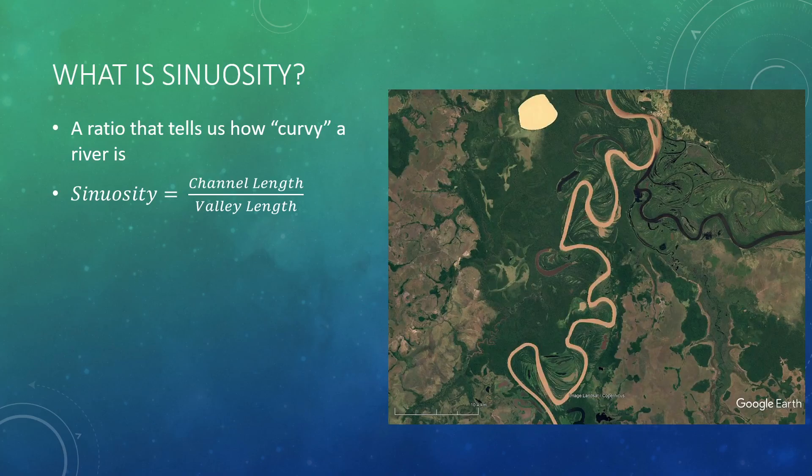So let's look at an example. This is the Rio Memoir in Bolivia. Notice how windy and curvy the river is here. Now here's the line that we would use to measure the valley length. In most alluvial rivers this line is significantly straighter as it reflects the middle position of the surrounding valley walls.